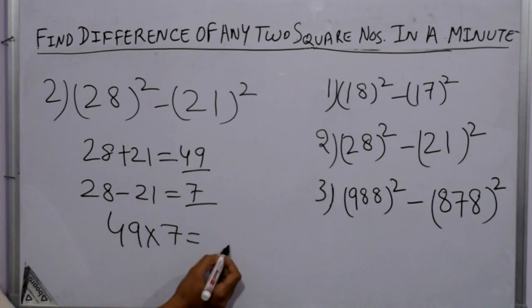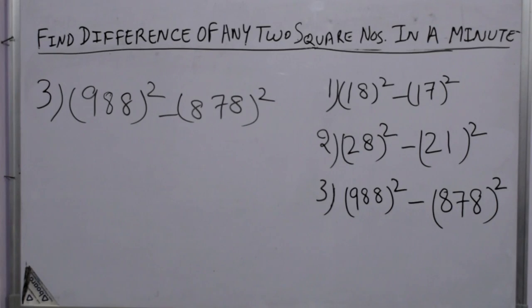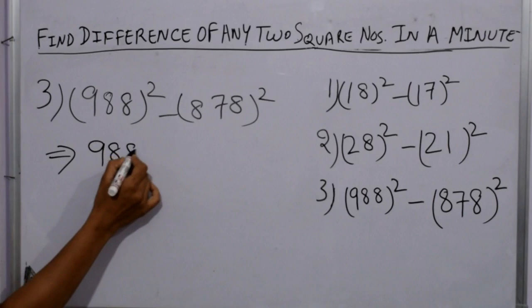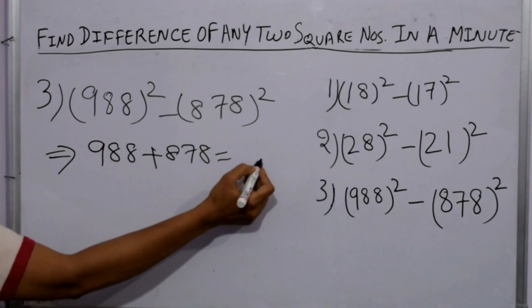We got 343. Now moving on to our third sum, just add 988 and 878.